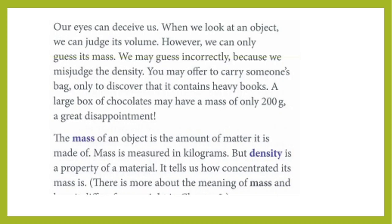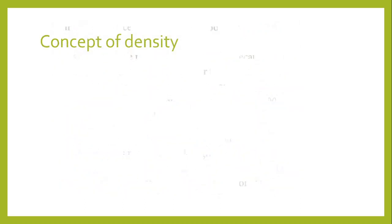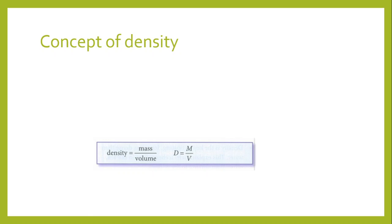Mass is the amount of matter an object is made of, and it is measured in kilograms. Density is a property of material — it tells us how concentrated the mass is, meaning how much mass it has per unit volume. It doesn't matter what shape the object is, because density is a property of the material. This is the main formula: density equals mass divided by volume.